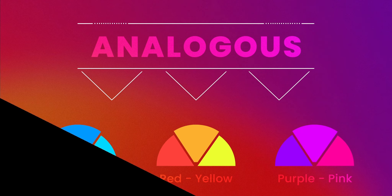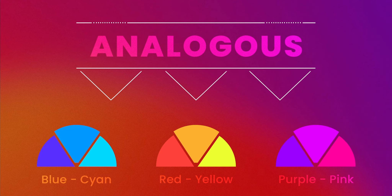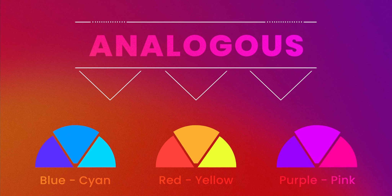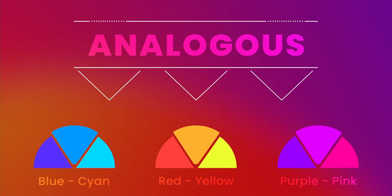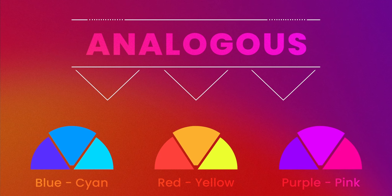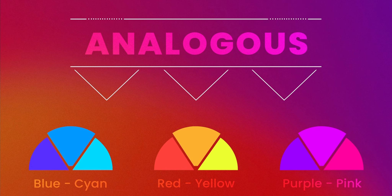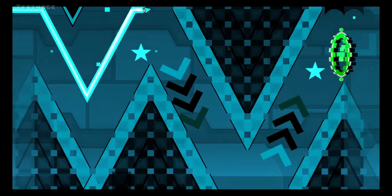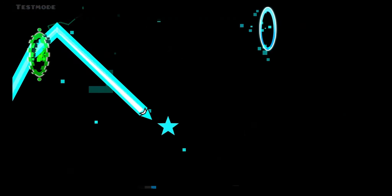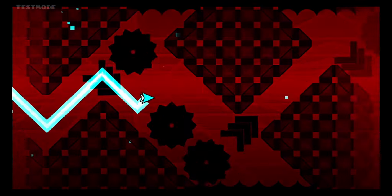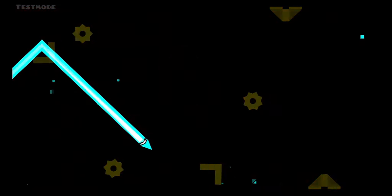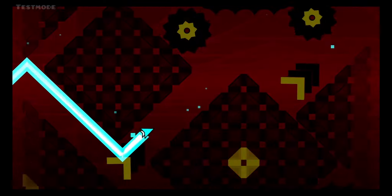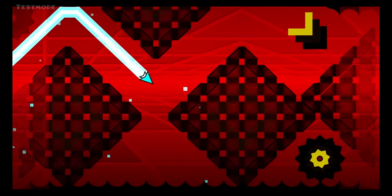The first color group I want to mention is analogous. It consists of colors that sit right next to each other on the color wheel. It was widely used in nine circles levels — Fear Me, Jawbreaker, Fairy Dust, Nine Circles, and Sharp Minor are just a few examples. The creators would usually pick a color and then slightly change the hue to make the other structures.